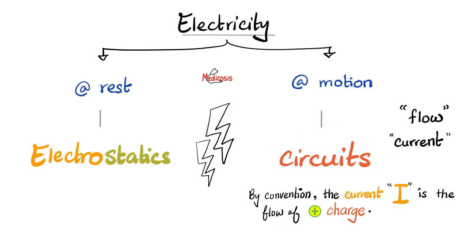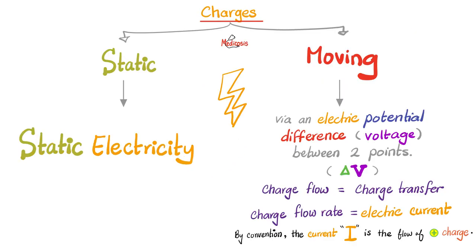By convention, the current is the flow of positive charge, even though in actuality the electrons are the ones flowing and electrons are negative. By convention we talk about the flow of positive charge because it's easier. When there is a positive end and a negative end, we assume the electric current moves that way. Electricity moves in the wire because there is an electric potential difference between point A and point B, creating a delta V. The charge flows and flows — the rate by which that charge flows is called the electric current.